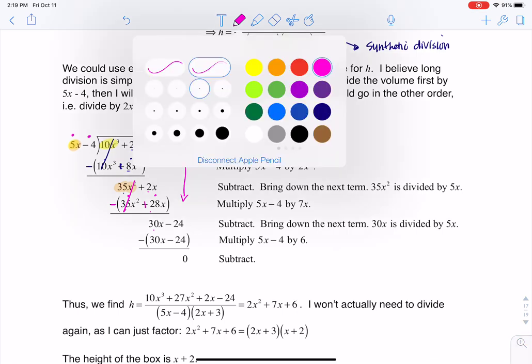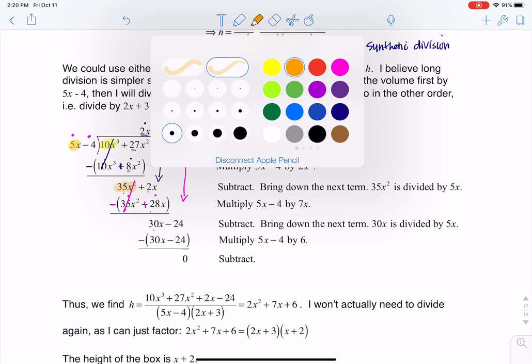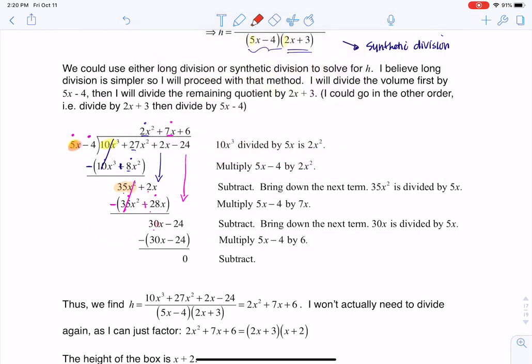I think I might have forgot to bring down the positive 2x last time. But if I run that division one more time, let me do a different color. Now we're going to take a look at what do you multiply 5x by to get to 30x, and we know that that's positive 6. And then when I run this out, I get a remainder of zero.